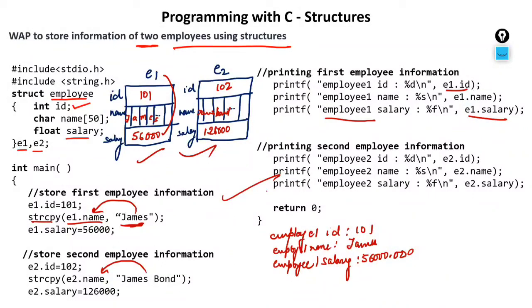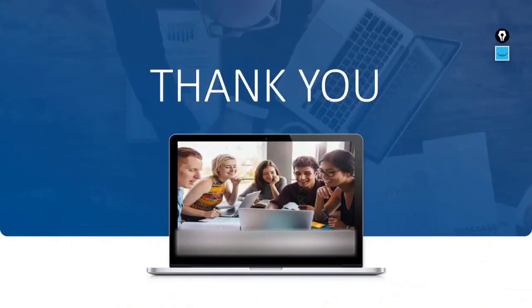Now there is an important drawback in this program. Right now we only have two employees, but what if we have 15, 20, 500, or 5000 employees? Will we keep writing this code again 500 times? That would be a kind of stupidity. Instead of doing things repeatedly, we will create an array of structures. In the next video, we will understand what an array of structures is all about. Thank you so much.